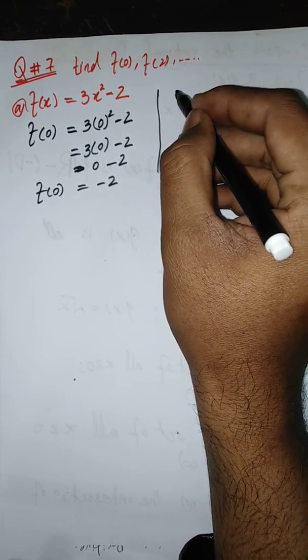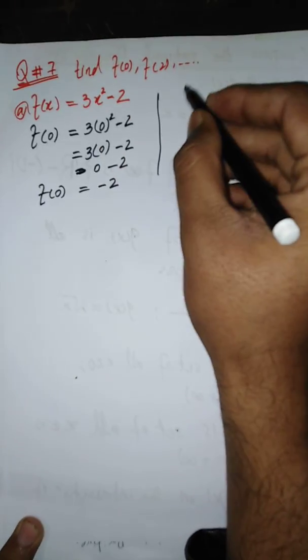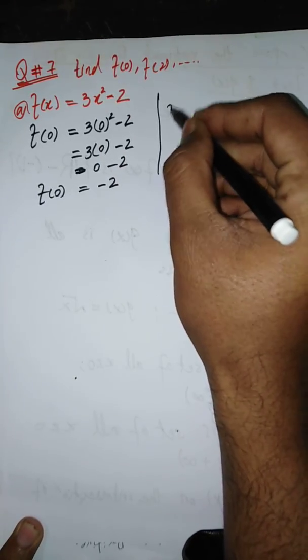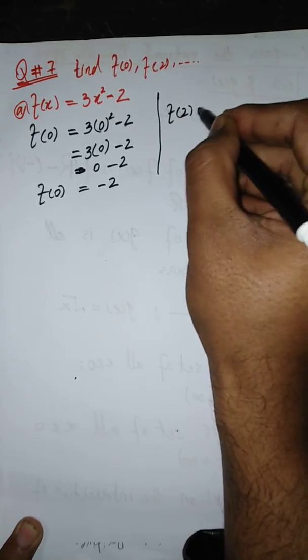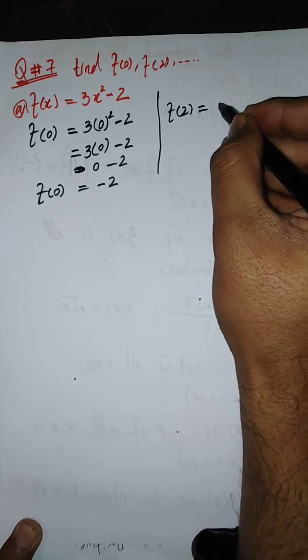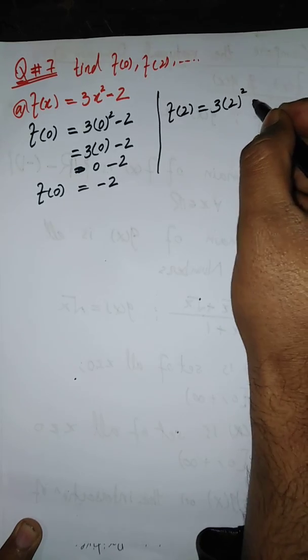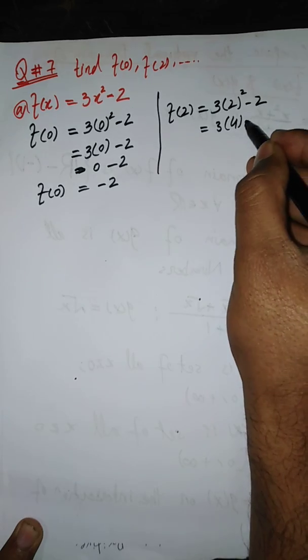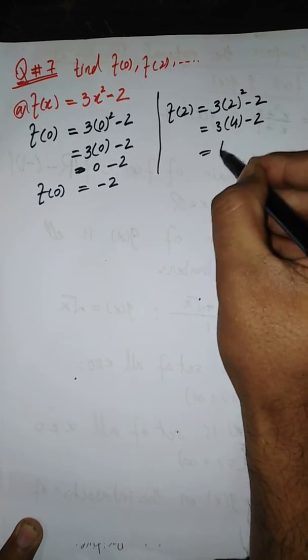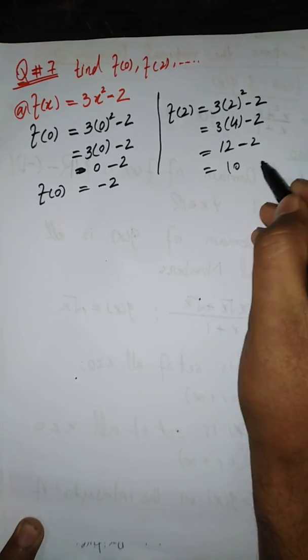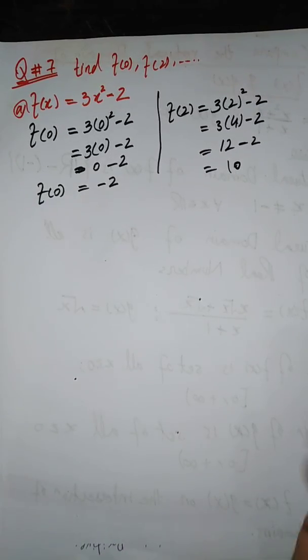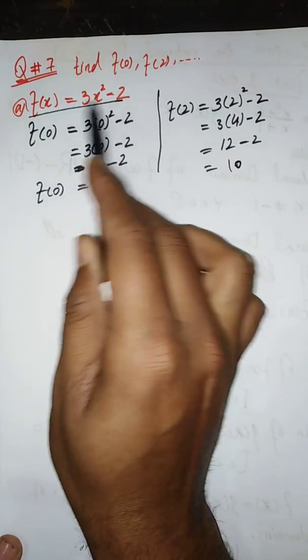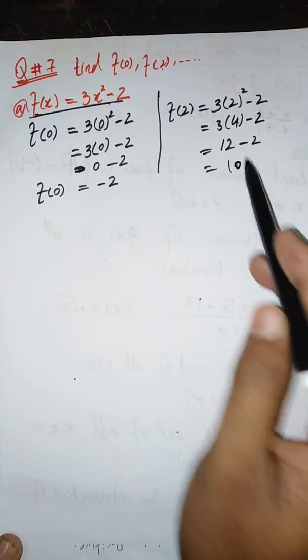Now for f(2), we replace x by 2 in our function. So we get 3 times 2 squared minus 2. Since 2 squared equals 4, and 4 times 3 equals 12, we get 12 minus 2, which equals 10. So the value of this function at point 2 is 10.